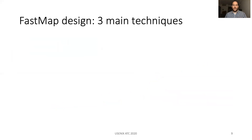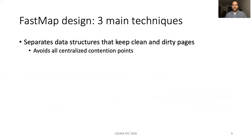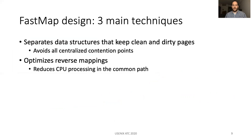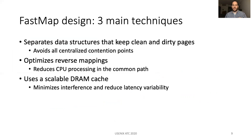FastMap is based on three main techniques. First, it separates data structures that keep clean and dirty pages to avoid all centralized contention points. Secondly, it optimizes reverse mapping to reduce CPU processing in the common path. And thirdly, it uses a scalable DRAM cache to minimize interference among processes, which results in reduced latency variability.